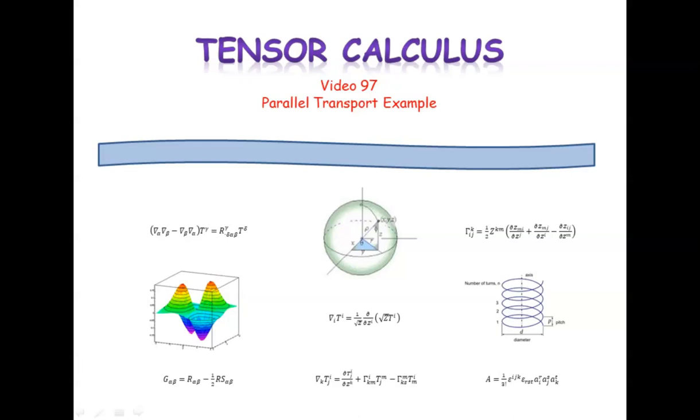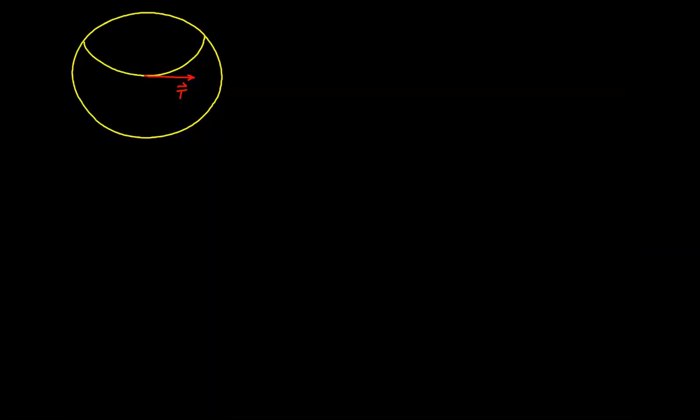In video 97 of Tensor Calculus, we'll follow up the last video with a specific example of parallel transport. What we're going to do is build on the demo we did in video 94. We're going to parallel transport a vector t along the circle that's embedded in the spherical surface.